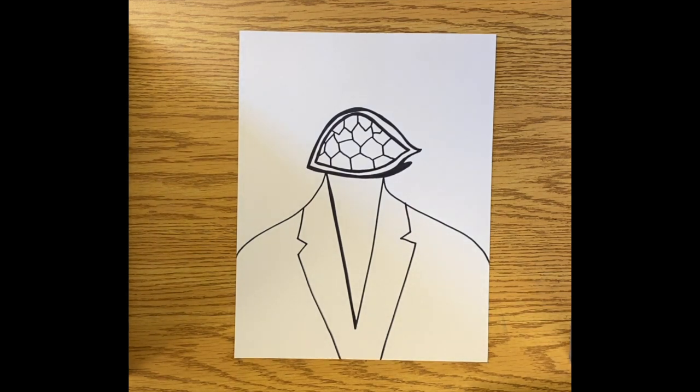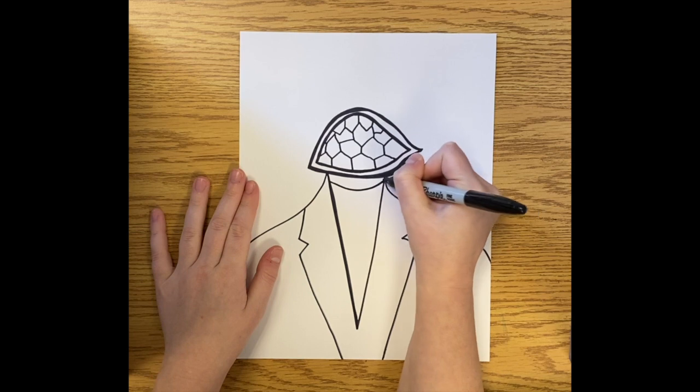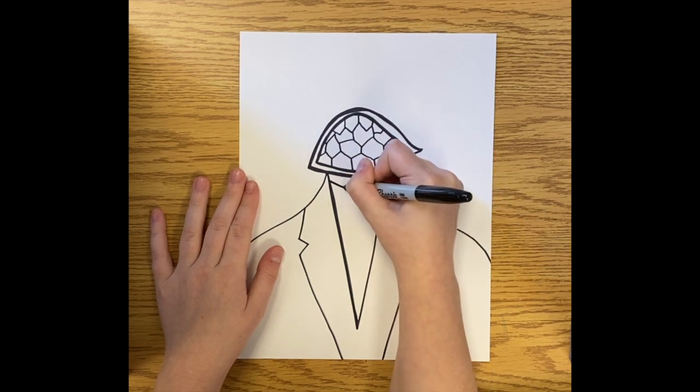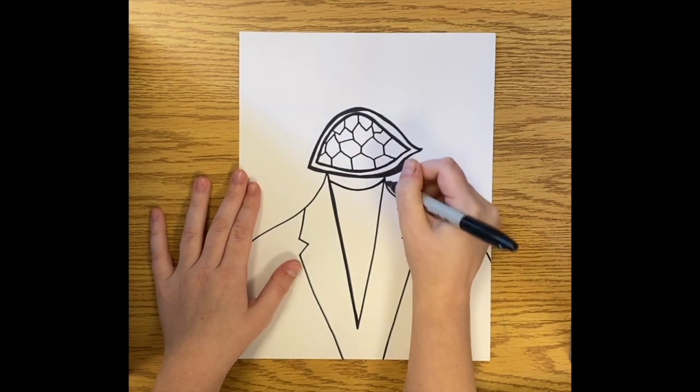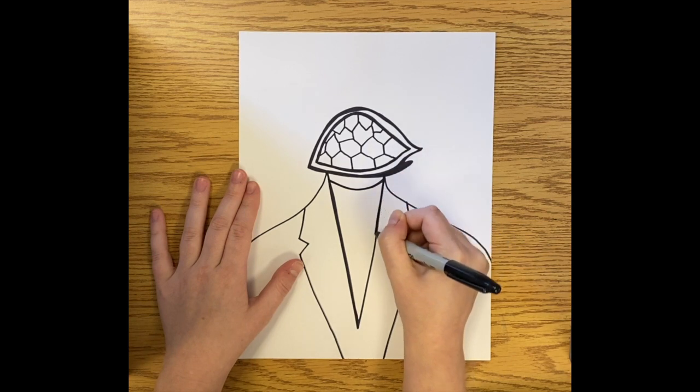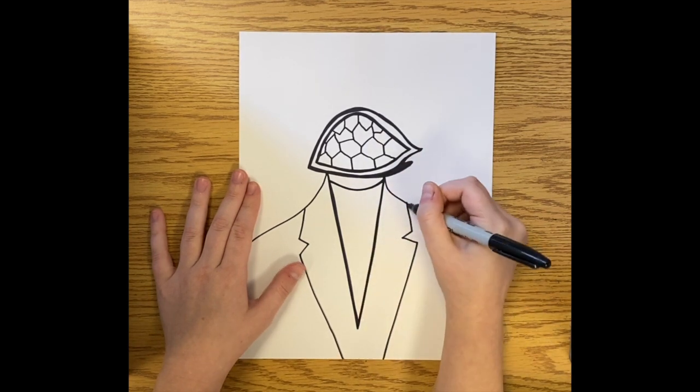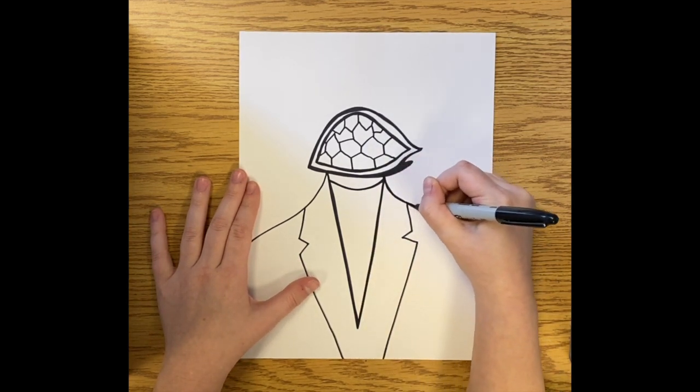And then I need to draw my neck, so I'm just going to do a curved shape kind of right underneath my turtle shell. And then I just go back up and kind of darken some lines and make a few lines thicker to add emphasis and detail.